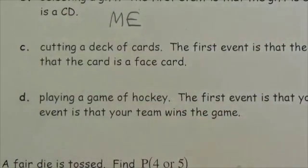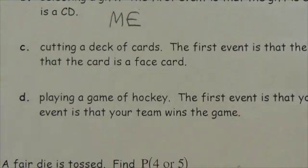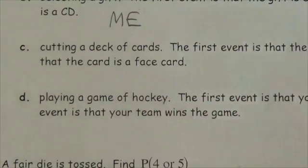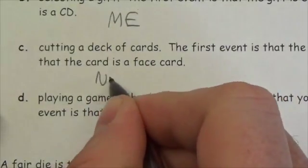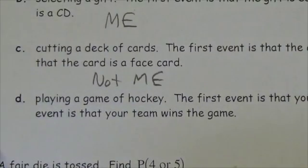Cutting a deck of cards: the first event is that the card is a spade, and the second event is that the card is a face card. Is it possible that you can have a face card that is a spade? Yes — the jack, the queen, and the king of spades are all face cards that are spades. So these are not mutually exclusive events; they share three outcomes.